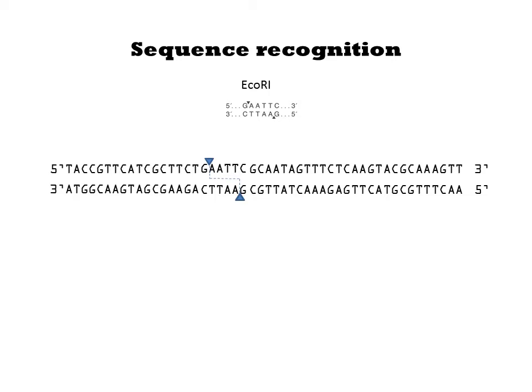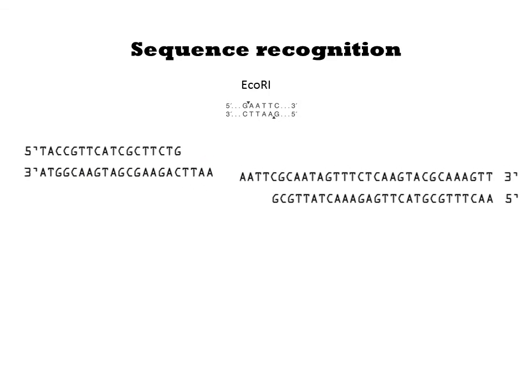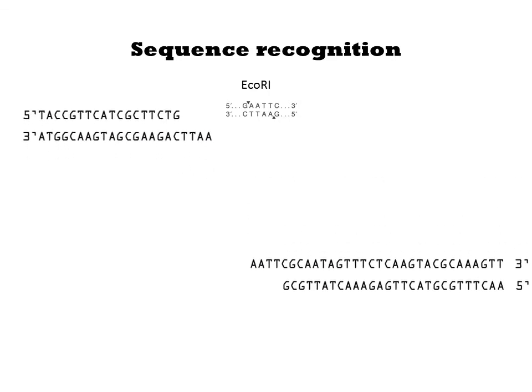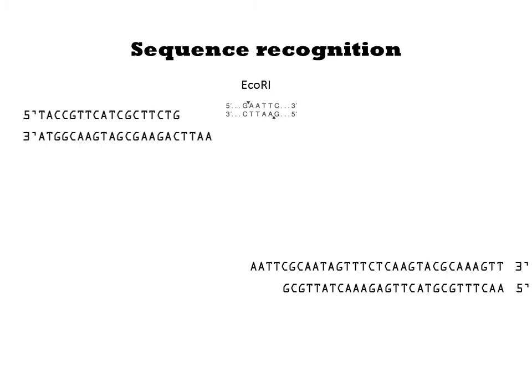EcoRI cuts the DNA at the triangles, resulting in four base pair overhangs on the newly formed ends. These extended sequences are referred to as sticky ends or compatible cohesive ends.